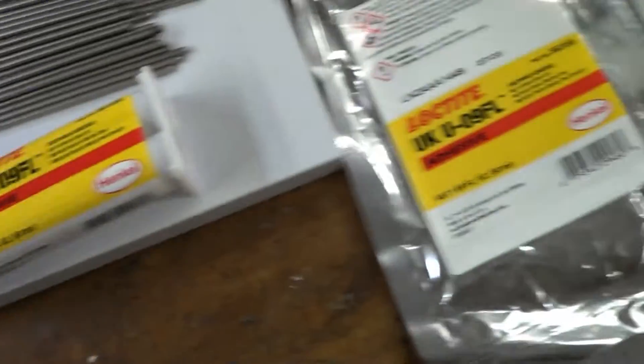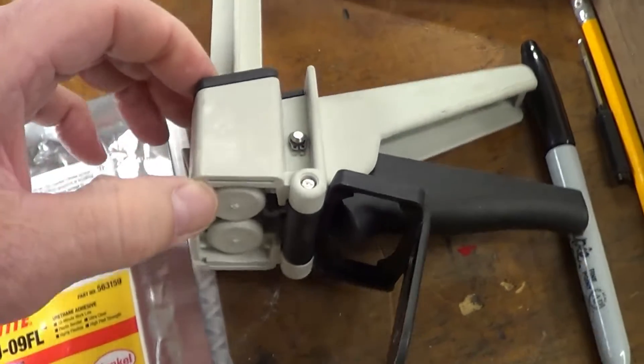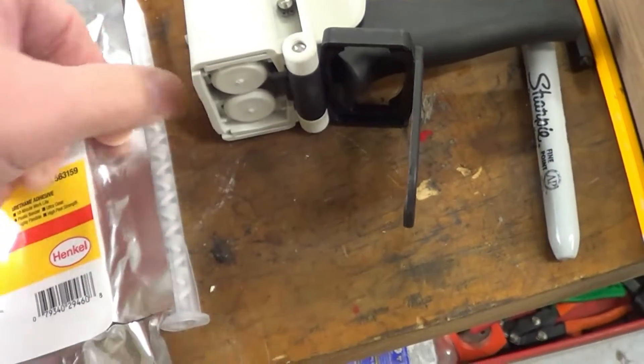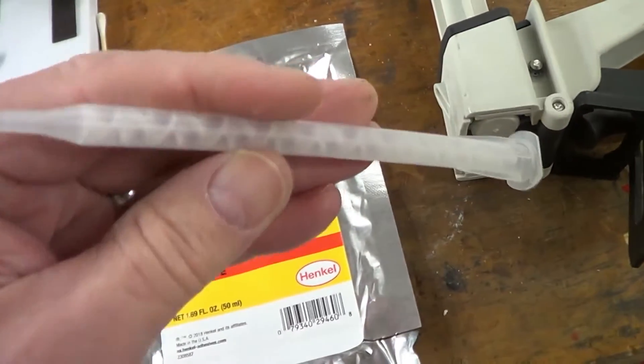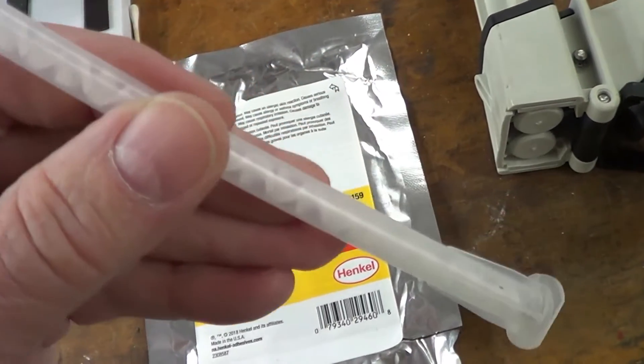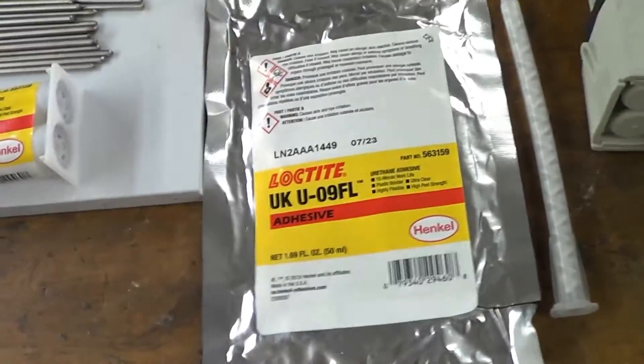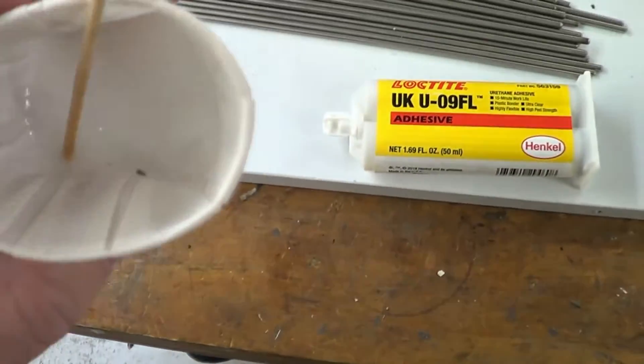What I do is use this dispensing gun here. It's set up to dispense 50-50, and you're supposed to use a mixing nozzle like this. But for small amounts like I use most of the time, I don't use the nozzle. I just dispense small amounts into a mixing cup and mix it with a stick.